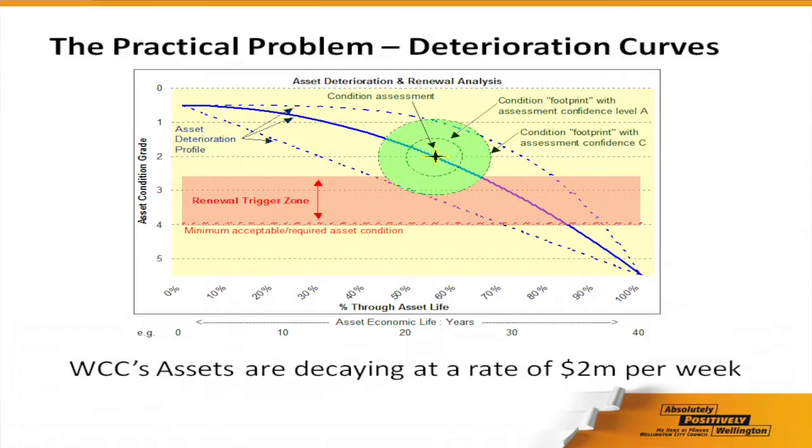The big driver here is without doubt our infrastructure. The costs are huge and it's getting into a bit of a crisis zone. Wellington City is decaying at a rate of $2 million a week.